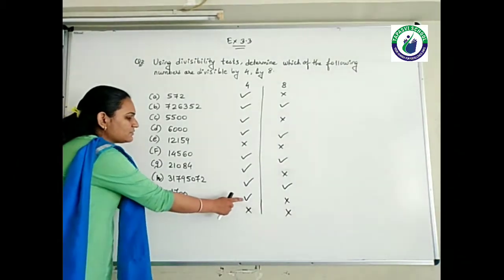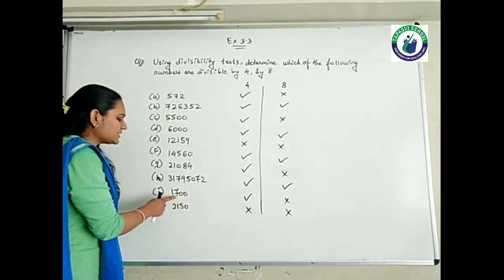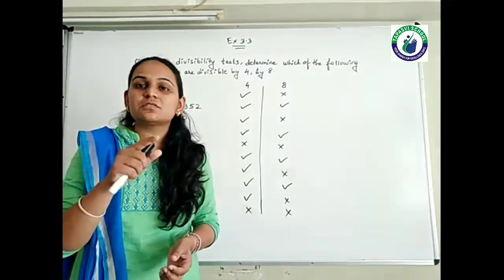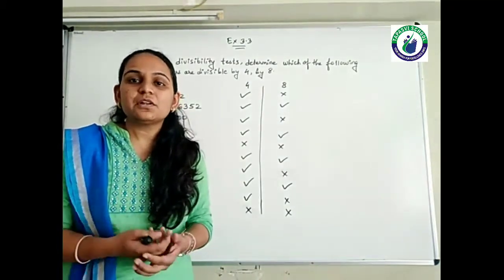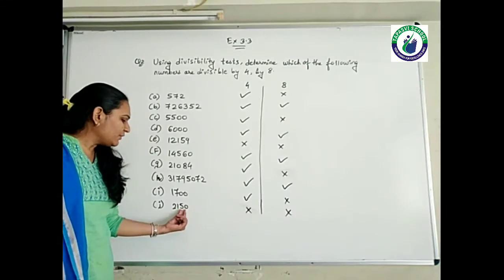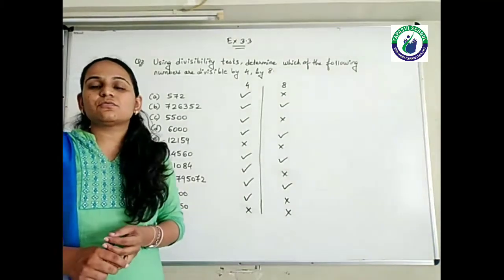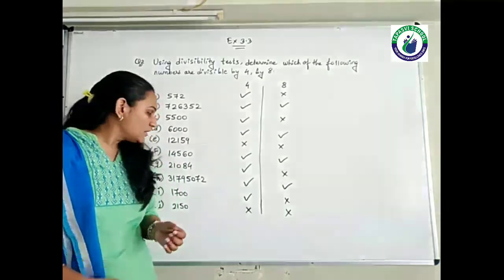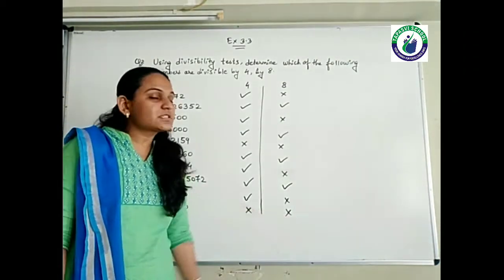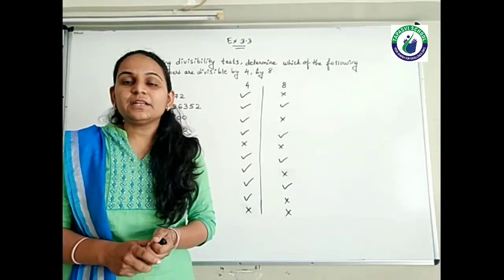Last two digits are 0, so yes, it is divisible by 4. Last three digits — 700. So 700, we cannot divide it by 8 because 7 is an odd. We cannot divide it by 8. 150: last two digits are 50, so it is not divisible by 4. Last three digits 150 — it is no, because again it is representing an odd number only.